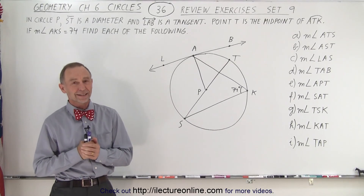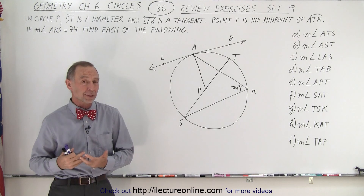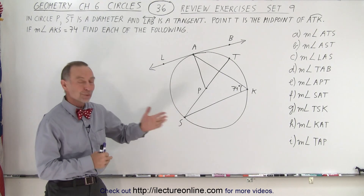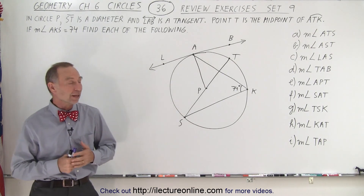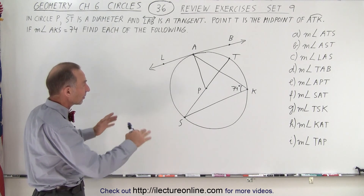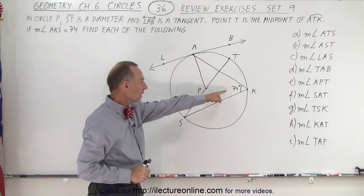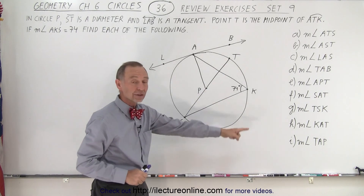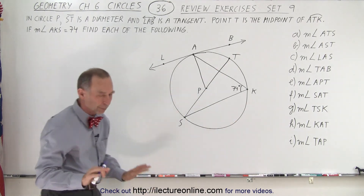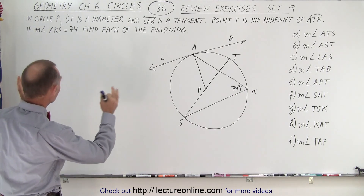Welcome to my lecture online. In this example we have our work cut out for us because there are a lot of questions — A through I. We're given a circle, some lines are drawn, and they only give us the measure of one of the angles, asking us to find all the other angles. Let's take a look and see what this problem is asking for.